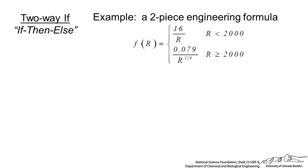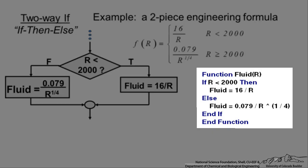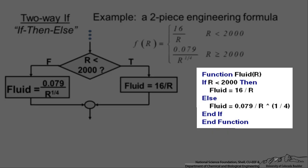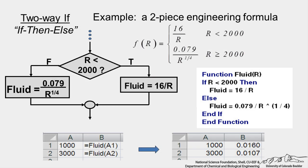Another example, let's say we had a two-piece engineering formula. We are calculating the friction factor dependent upon the Reynolds number, r. And so, depending upon the range of Reynolds number, if it is less than 2,000, the friction factor is 16 over r. If it is greater than 2,000, we have a different formula. So this is the code. If r is less than 2,000, then f fluid equals 16 over r, else f fluid is something else. And when we run this, we can get two different formulas depending upon that range for the input Reynolds number, r.